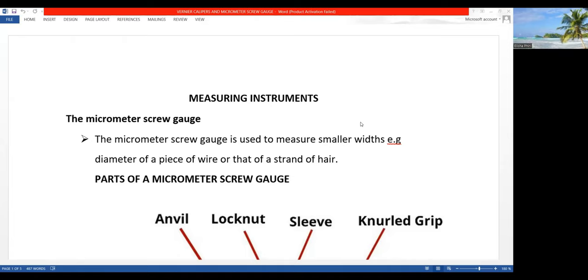Now, in a case where a ruler has some shortcomings, of course, there are some substances whose lengths can be measured using a ruler. But in a case where a ruler cannot be used, a micrometer screw gauge can be used.